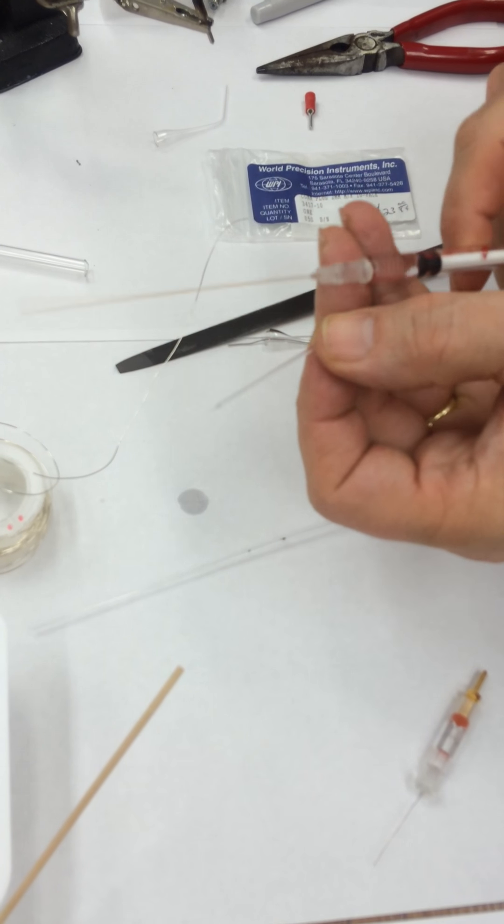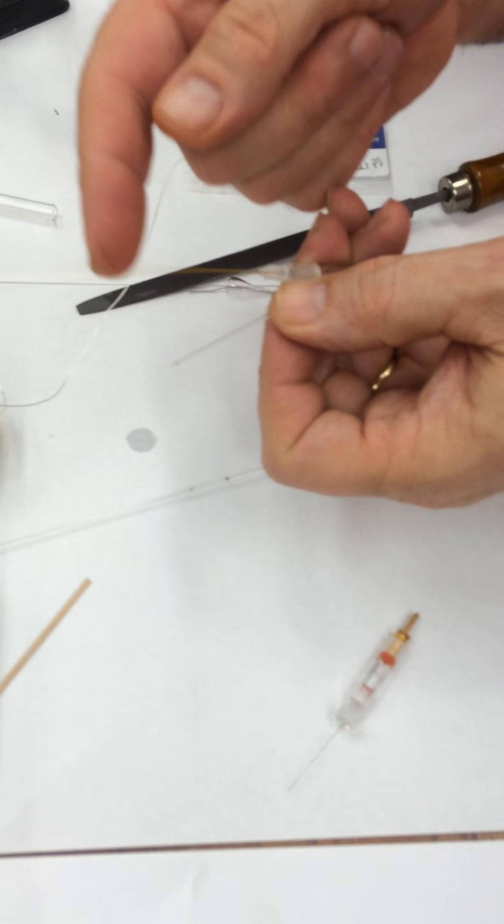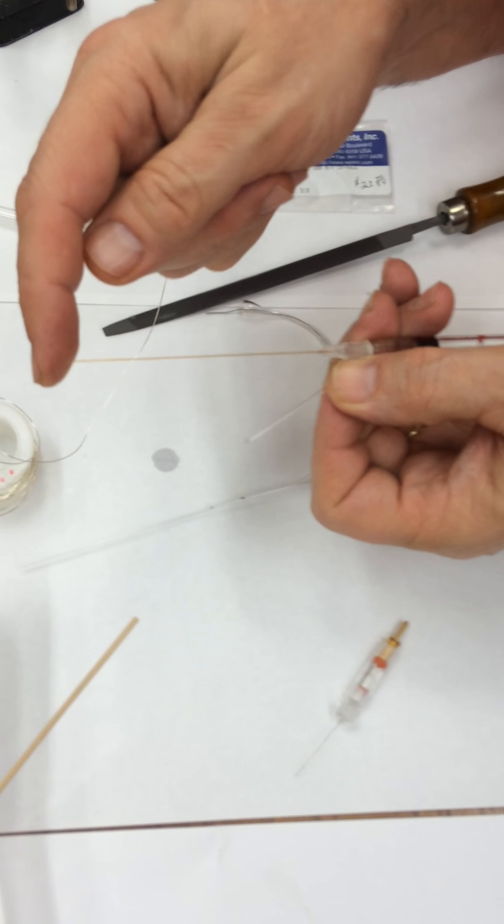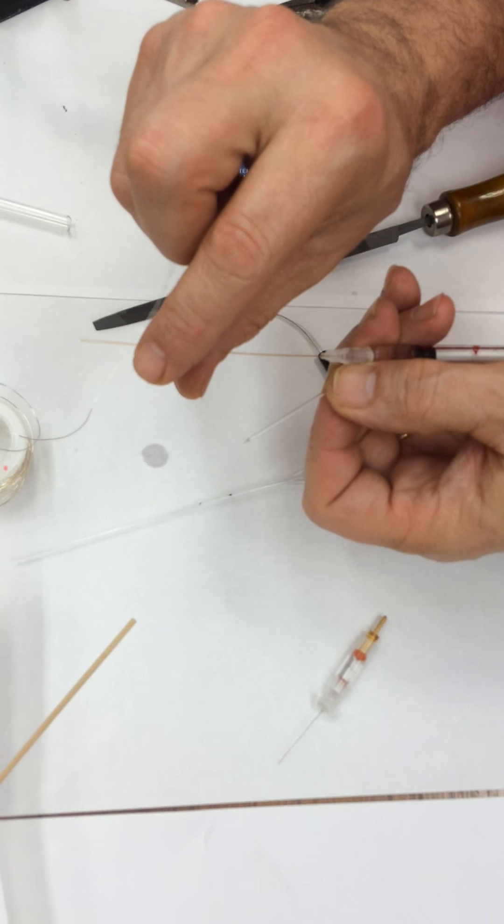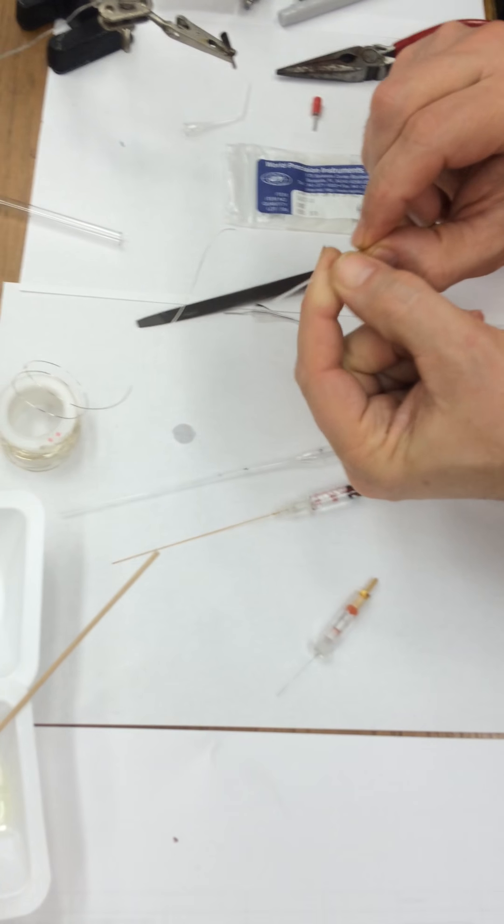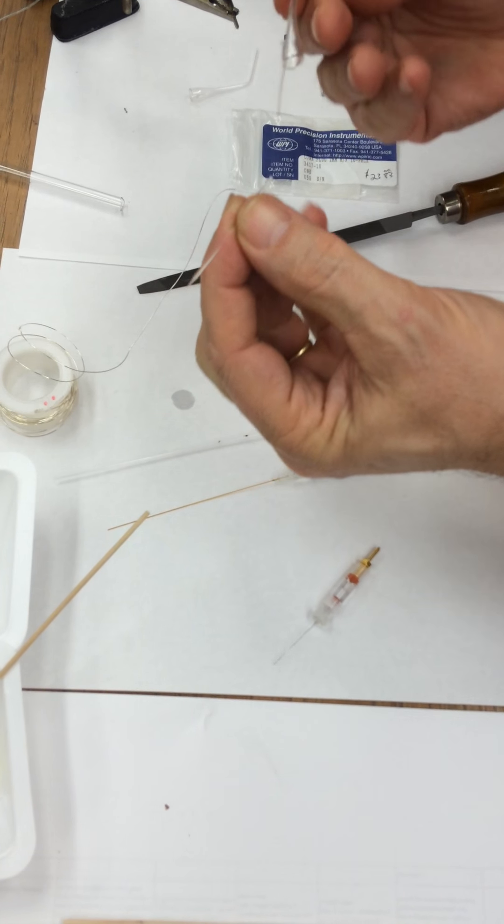Also just something to learn is that these little filament electrodes, these are $10 each. So you want to be a little careful not to bend it too much and break them because each one is $10. Okay, so after you have your filled electrode, you can put this right onto your silver wire.